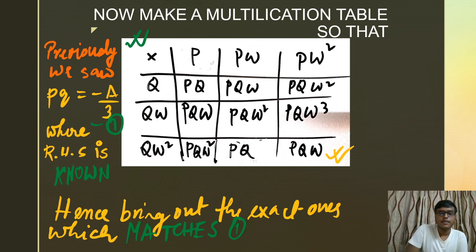We can make a multiplication table like that: on the top row there is p, pω, pω², down row q, qω, qω². You can alter the table as well, no problem will be there.